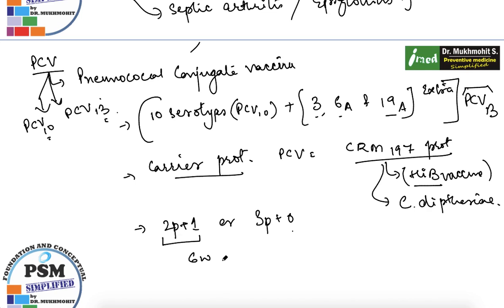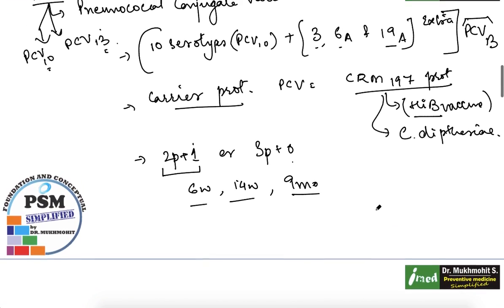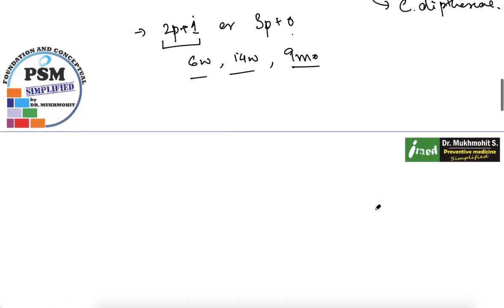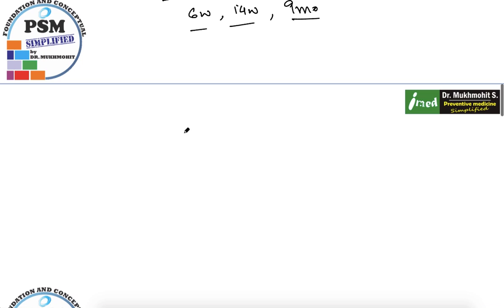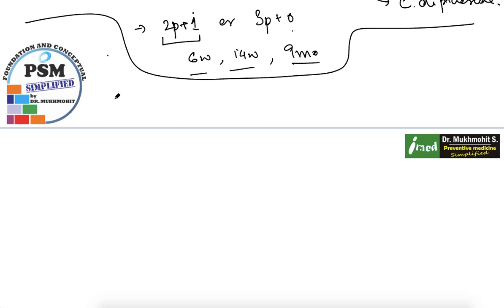In India, the PCV schedule is: first dose at six weeks, second dose at 14 weeks (not at 10 weeks), and the booster dose at nine months. That completes the pneumococcal conjugate vaccine schedule followed in India.